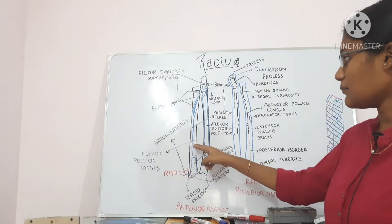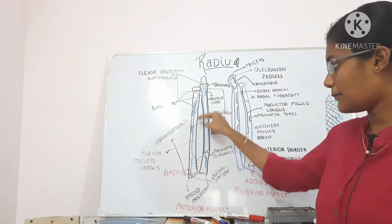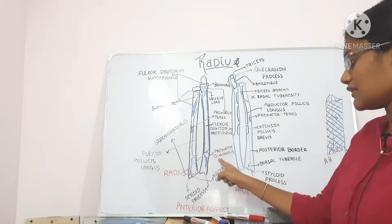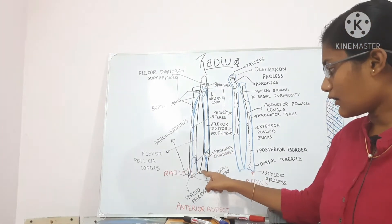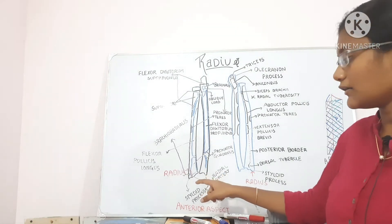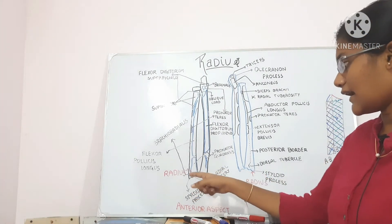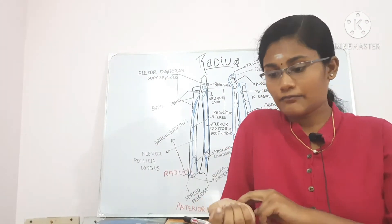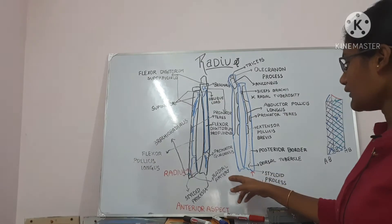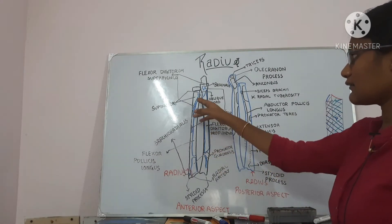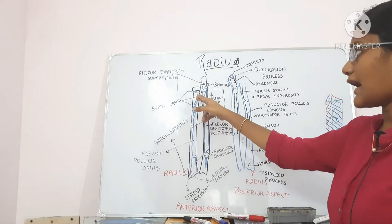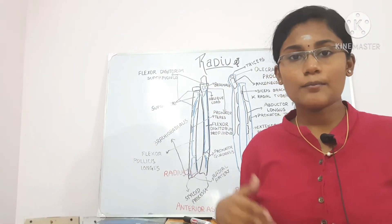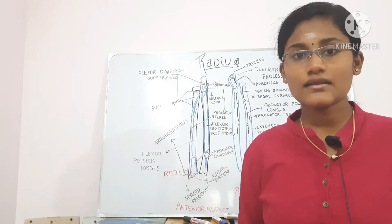The anterior surface lies between the anterior border and the interosseous border. It gives attachment to the flexor pollicis longus muscle on its upper two-thirds, and on its lower portion it gives attachment to the pronator quadratus, which extends medially over an elongated triangular area. The lower part of the anterior surface also has the radial artery, where we can feel the radial pulse. There is also a nutrient foramen on its upper part, which directs upward and carries the anterior interosseous artery.